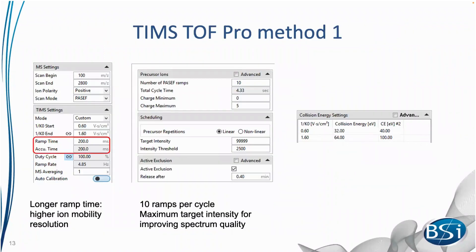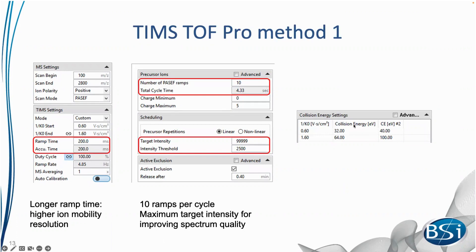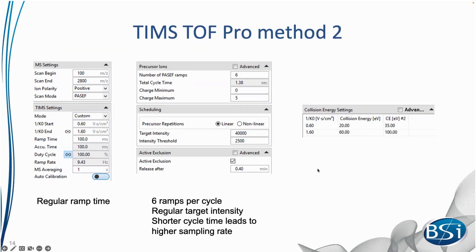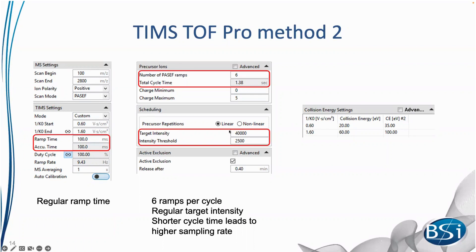For our TIMSTOF Pro, the first method used a longer ramp time to better separate glycopeptides by ion mobility, with 10 passive ramps per duty cycle and maximum target intensity to improve spectrum quality. The second TIMSTOF method used a more regular ramp time of 100 milliseconds with six passive ramps per cycle, resulting in a higher sampling rate, and a target intensity of 40,000.